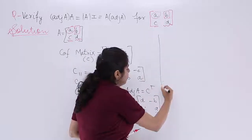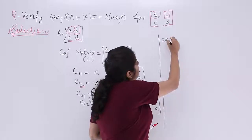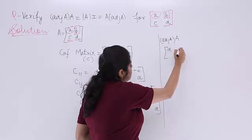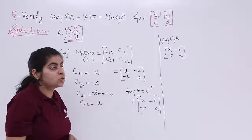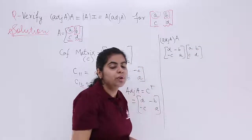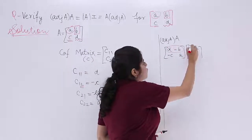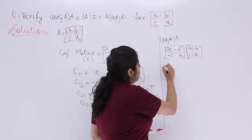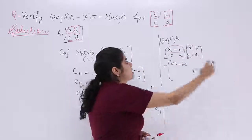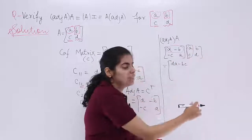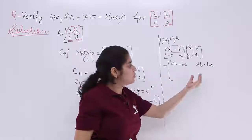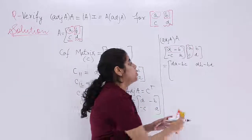For verification, first compute adjoint(A) × A. Adjoint(A) = [[d, −b], [−c, a]] multiplied by A = [[a, b], [c, d]]. Computing each entry: (1,1): da − bc; (1,2): db − bd = 0; (2,1): −ca + ac = 0; (2,2): −bc + ad. So the result is [[ad−bc, 0], [0, ad−bc]].